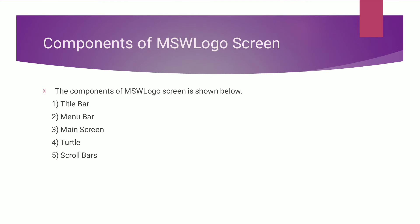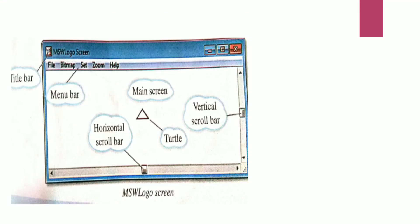Components of the MSW Logo screen. The components of the MSW Logo screen are: title bar, menu bar, main screen, turtle, and scroll bar. Components are the parts of the screen which help you to access your software. On this screen, the title bar is where you will see the title of the software, and the menu bar is where you will find all the menus related to the MSW Logo screen.